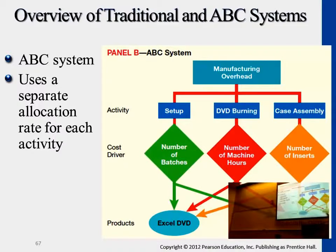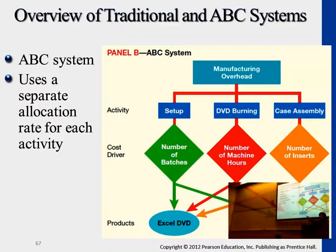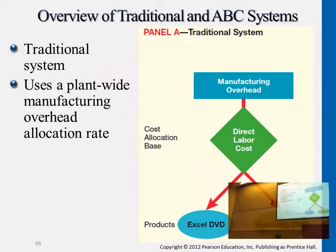Now we can properly capture — for example, if there are more machine hours incurred for a particular product, there will be more cost assigned to that product. Fewer setup actions means less setup cost for that particular assembly. Based on the different activities and the quantities actually incurred for different products, we assign different costs to different types of products instead of using just one driver like direct labor costs, which may not appropriately capture all costs incurred.